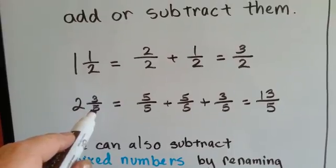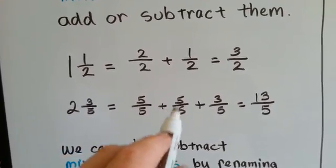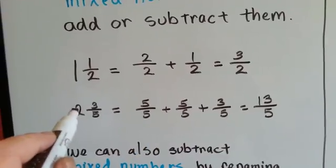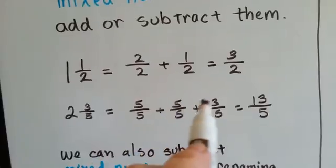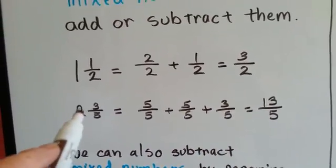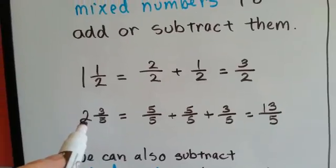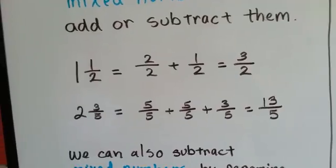Two and three fifths can become five fifths, which is one whole, and another five fifths, which is the two whole ones, and then a three fifths, which gives us five, ten, eleven, twelve, thirteen, thirteen fifths. So we rewrote and renamed this two and three fifths into thirteen fifths. See that?